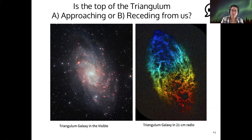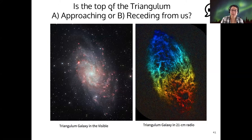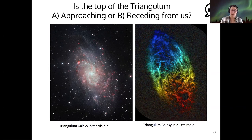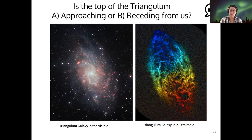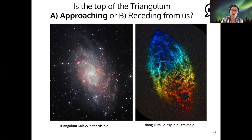So the top is blue shifting. Just in the chat, does that mean that the wavelength is getting squashed or getting stretched? Yep, so our wavelength is getting squashed if we have a blue shift. And that means that that particular part of that source is moving toward us. All right. So the blue shift up here means that that part of the Triangulum Galaxy is approaching us, whereas the bottom is receding from us.